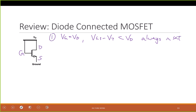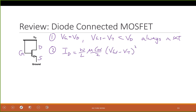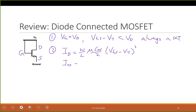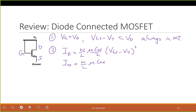Now the second thing is: what is the current across this one? It still uses the same equation because it's in saturation. This must be (Vgs minus Vt) squared. But Vg equals Vd, so this is also equal to (Vds minus Vt) squared.